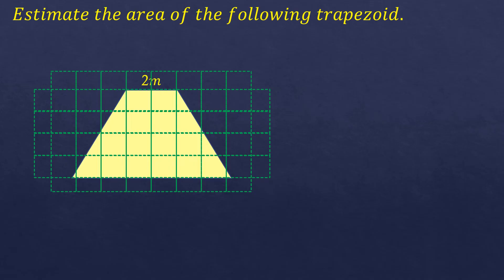Let's count how many squares are fully shaded: 1, 2, 3, 4, 5, 6, 7, 8, 9, 10, 11, 12. There are 12 fully shaded squares.